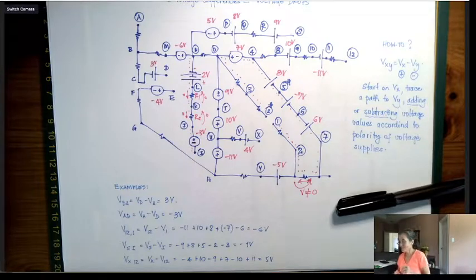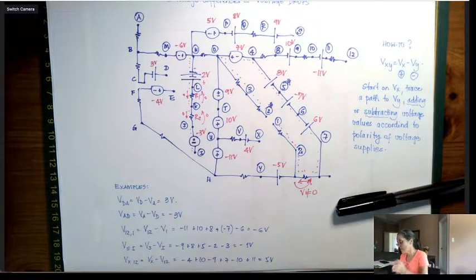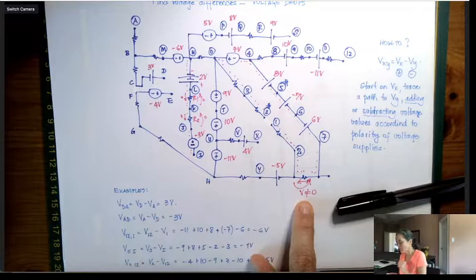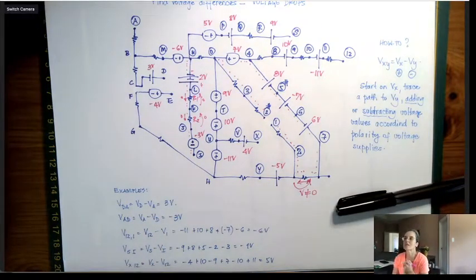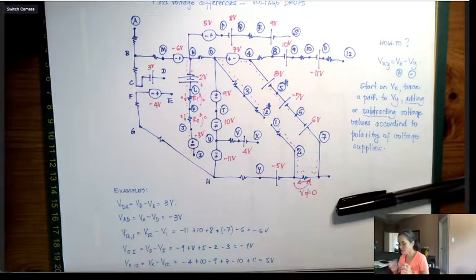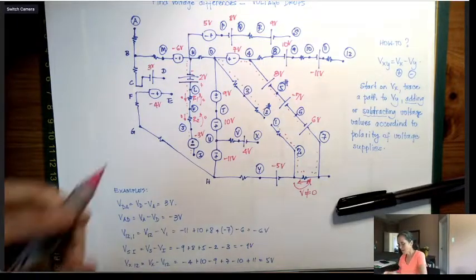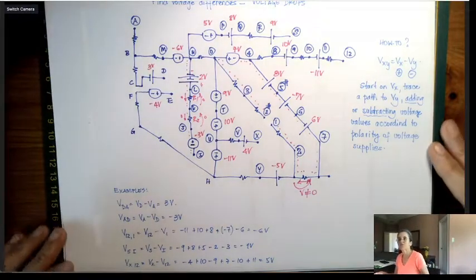So I cannot necessarily find the voltage drop between 1 and 2 without assuming some voltage here. So I'm going to show you how you would go about if this is a question on an exam and you notice this resistor here is not open, which is not, how would you go about finding V2-1 and V1-2? So let's do that.